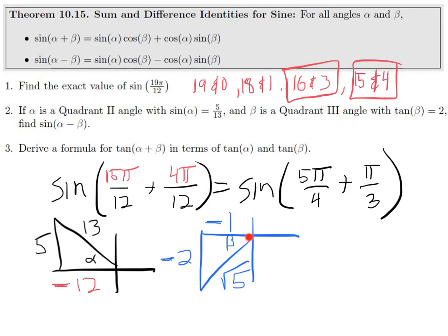Now that we have that triangle, we could work out sine and cosine of beta. Using this information and our identity, we can work through this value. I'm not going to do part 3. This is the kind of examples that you will see for the sum and difference of sine.